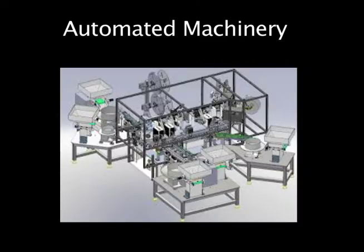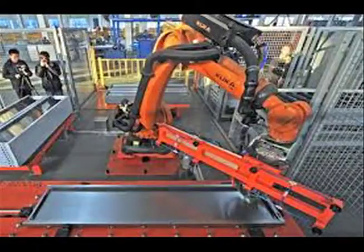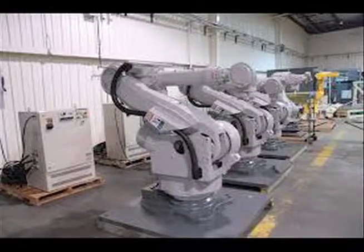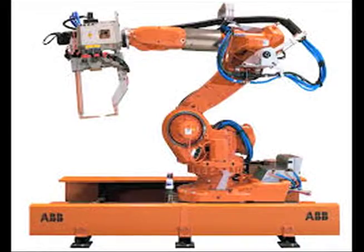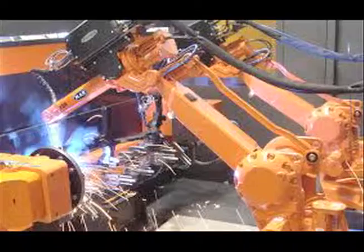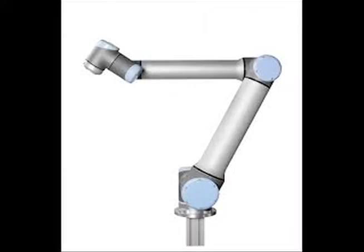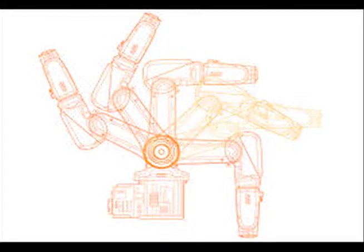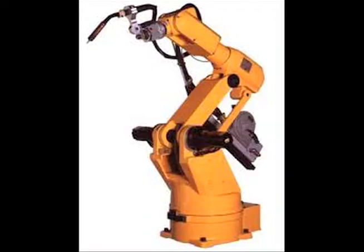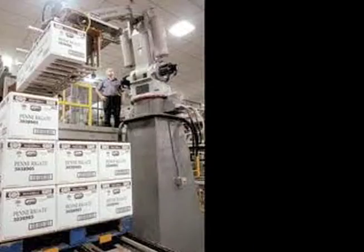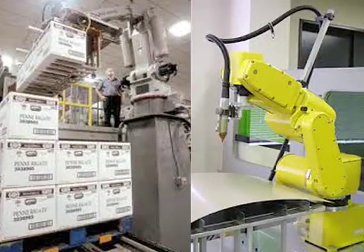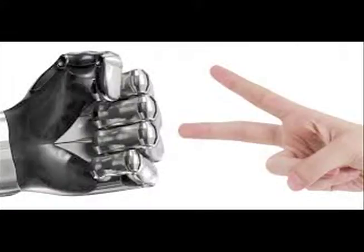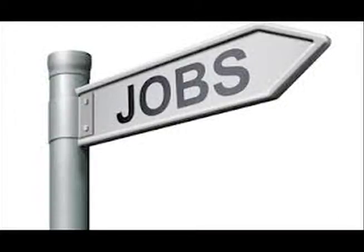Automated machinery are robots in the industrial field that work in factories, and the articulated robot is one of them. In 1979, the first articulated robot was built by Hiroshi Makino of Yamanashi University, designed by the selective compliance concept.